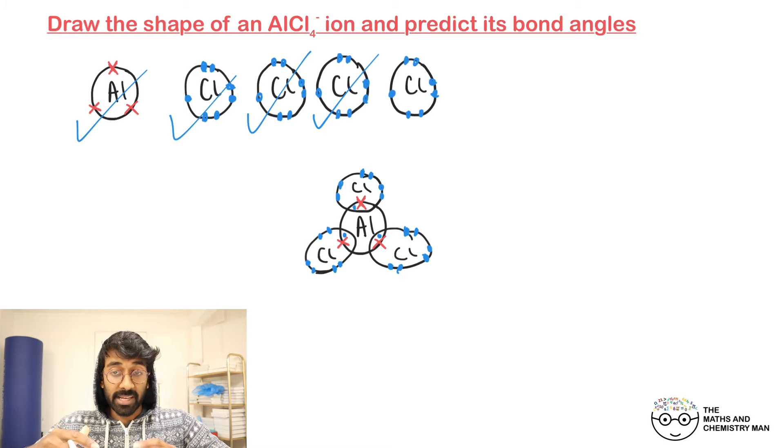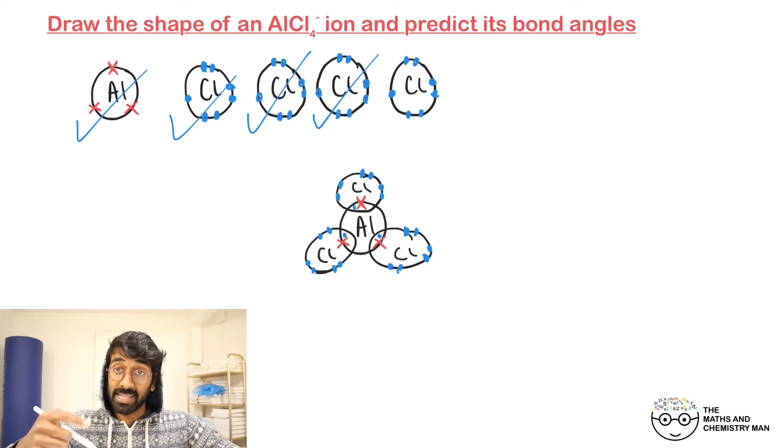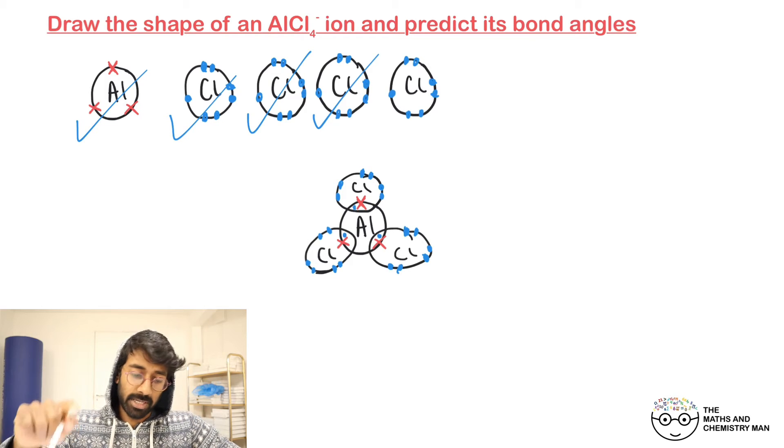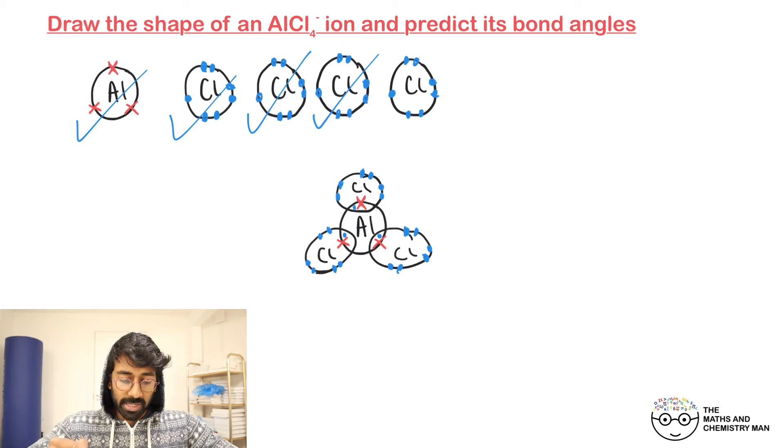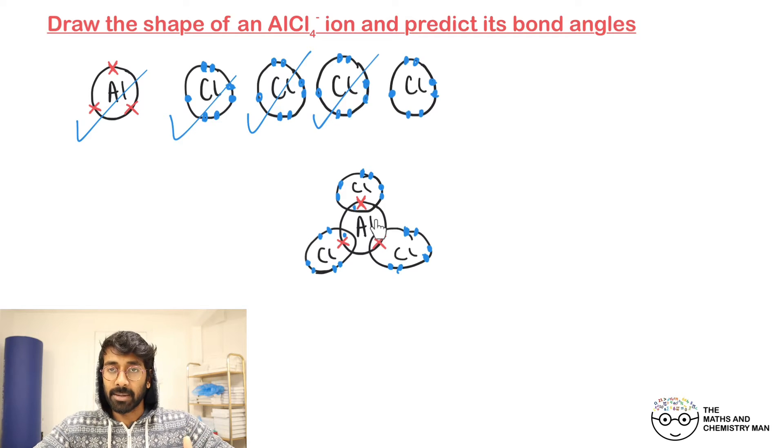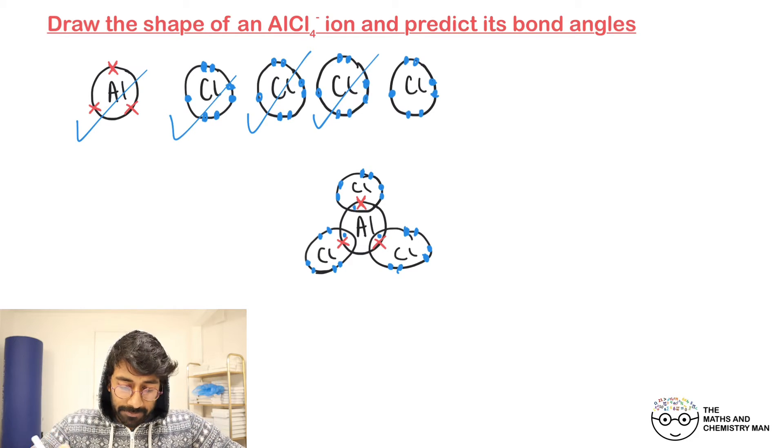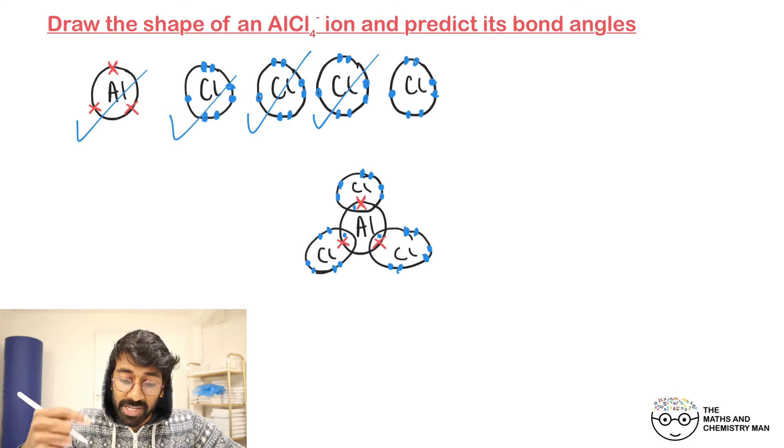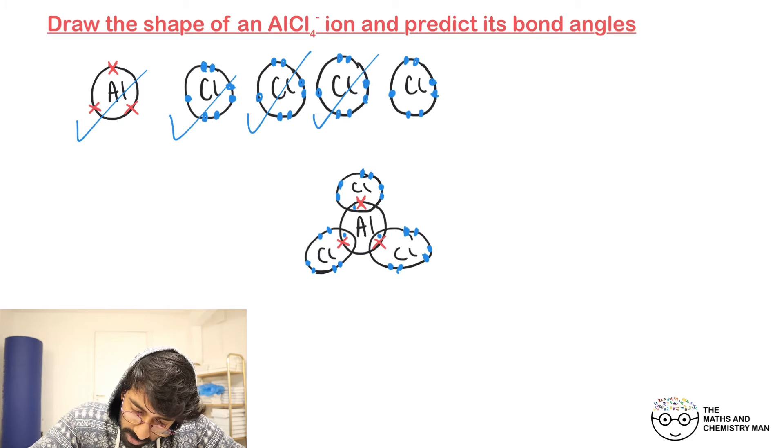We were supposed to draw AlCl₄⁻. We've got to get this chlorine onto here somehow. That chlorine is going to have to be a chlorine ion. We'll need to give it another electron - I'm giving it this green one. If it's got one more electron, that means it's a Cl⁻ ion.